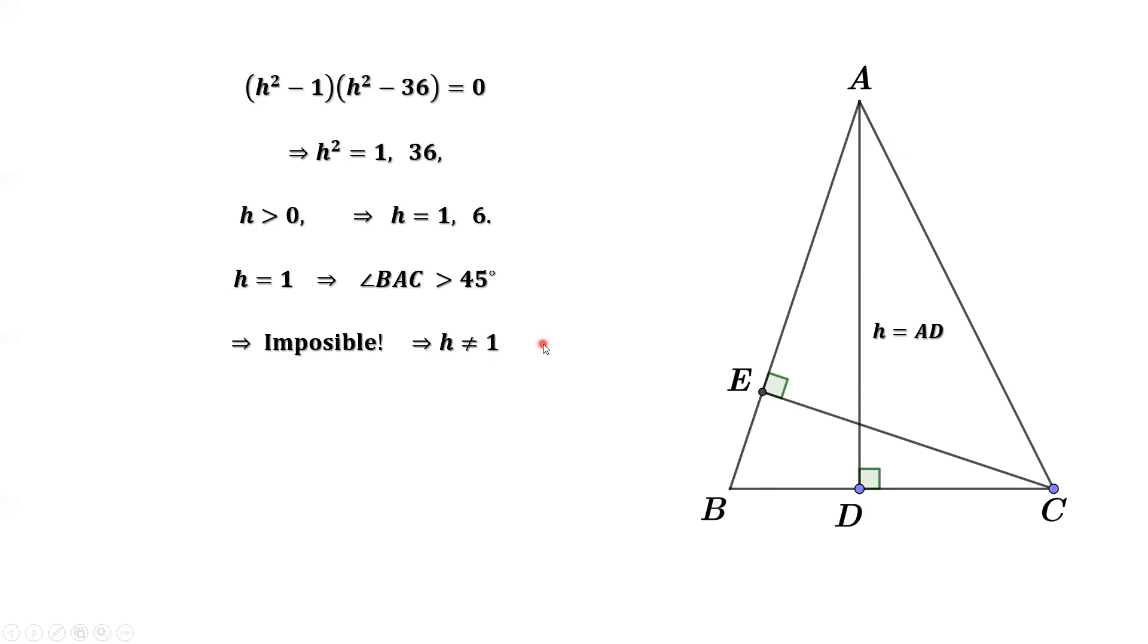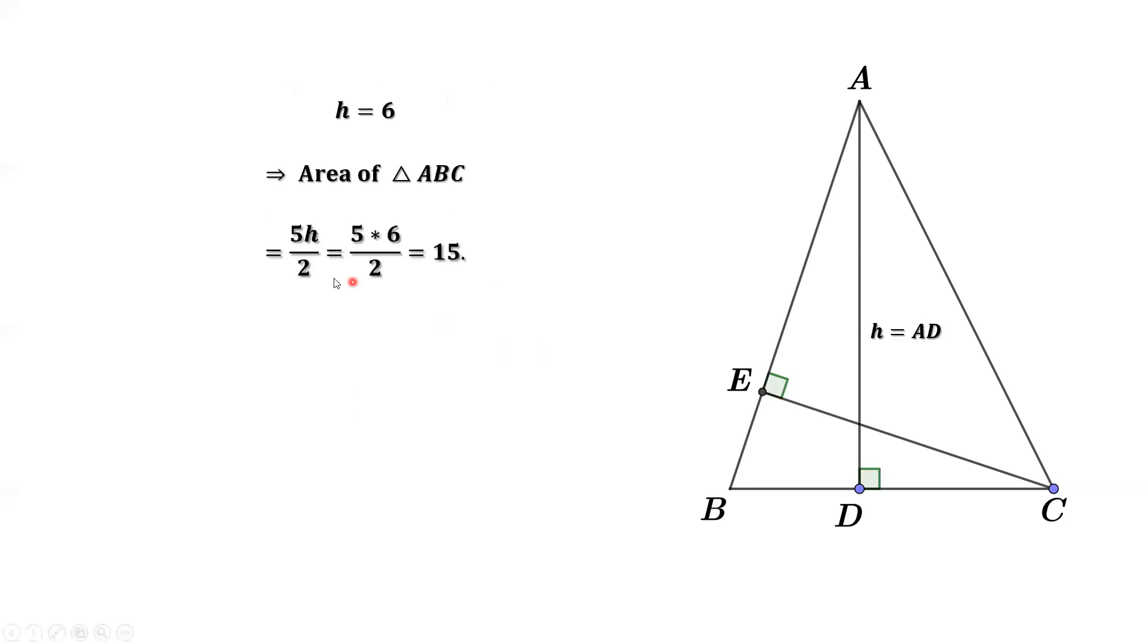This implies H equals 6 only. When H equals 6, we can calculate the area. Use the formula, 5H over 2. Replace H by 6. The answer is 15.